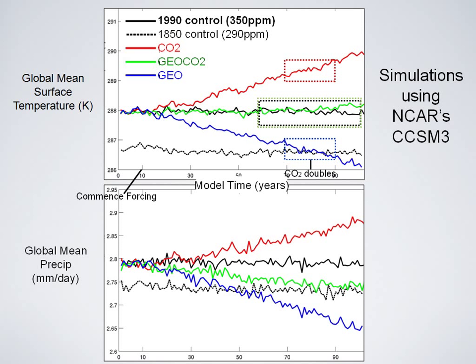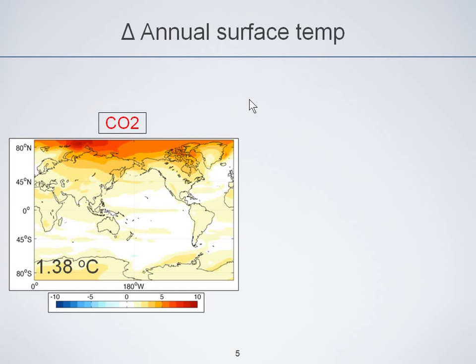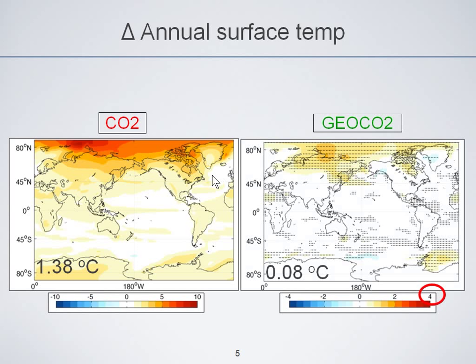The next figures I'll be showing are averages of these time periods — the 20 years surrounding CO2 doubling and the 40 years surrounding CO2 doubling. Just for reference, this is the change in surface temperature at the time of CO2 doubling in the CO2 run — an increase of 1.4 degrees. Comparing that to the net run, the color bar is much smaller; most surface temperatures are kept close to zero with some residual warming in the poles. So to first order, the sulfate layer does a pretty good job of canceling surface temperature.